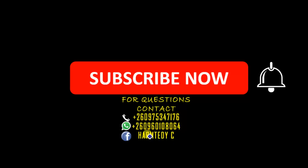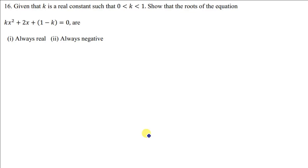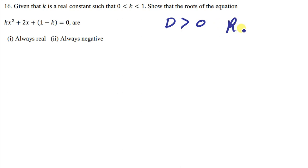So how can we show that the roots of this equation are always real? When you look at the rules of the discriminant, we know that when D is greater than zero, that is the situation where we have the given quadratic equation having two real roots. It can either have real or equal roots, so once we say D is greater than or equal to zero, we are talking about two real roots — they can either be equal roots or two different roots, but they're supposed to be real roots.